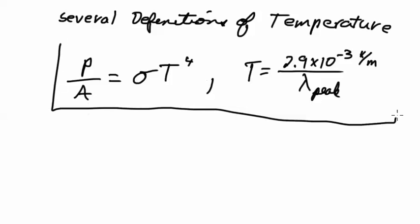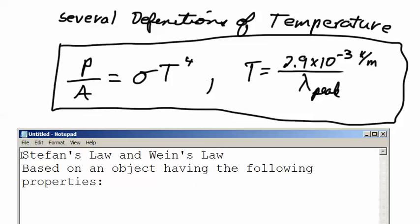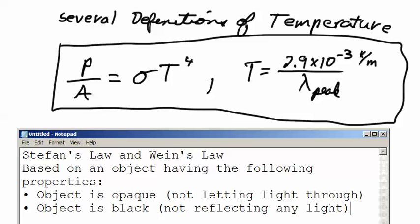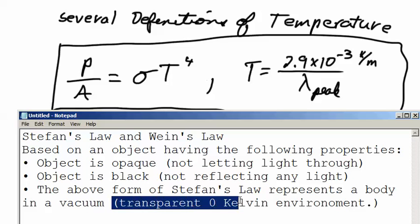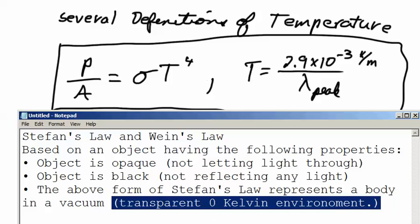These two properties called Stefan's law on the left and Wien's law on the right are based on an object having the following properties: The object must be opaque, which means that it's not transparent. It's not letting anything through. And the object must be black, meaning it's not reflecting any light. Furthermore, the above form of Stefan's law, this sigma T to the fourth, represents a body in a vacuum, which is a transparent zero Kelvin environment.